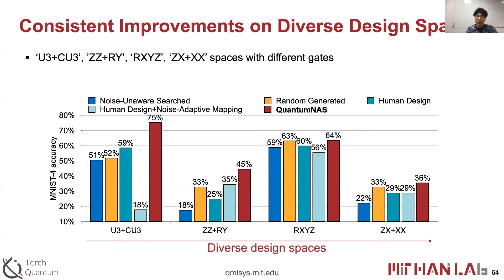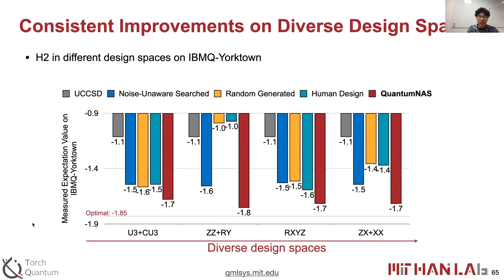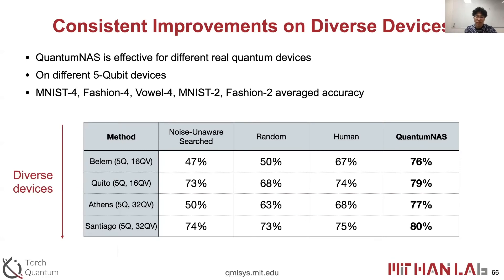Here is the comparison for four design spaces using different kinds of gates: U3 plus CU3, ZZ plus RY, RX/RY/RZ, and ZX plus XS gates. QuantumNAS, shown in red, achieves consistent improvements across all four diverse design spaces over the baselines. For the VQE on the hydrogen molecule, QuantumNAS in red is very close to the optimal value of minus 1.85 and much closer than baselines such as UCCSD. We also experimented on different 5-qubit devices — Belem, Quito, Essex, and Santiago — and QuantumNAS outperforms several baselines by a very large margin across all four devices.